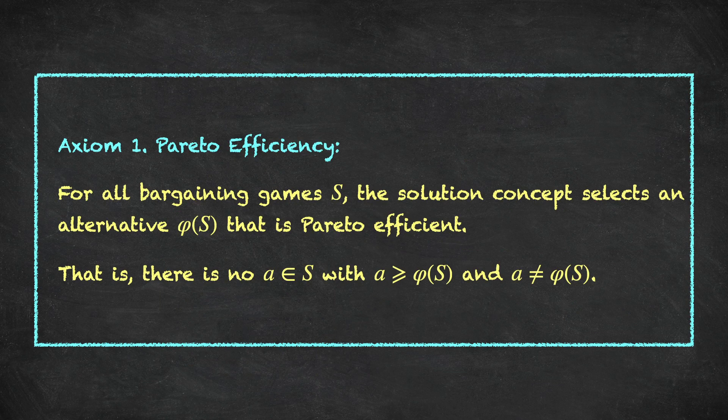The formal statement: Axiom 1, Pareto efficiency, says that for all bargaining games S, the solution concept selects an alternative phi of S that is Pareto efficient. Formally, there are no other alternatives A in the bargaining game S that are greater than or equal to phi of S and not equal to phi of S. This is a vector inequality — if A is greater than or equal to phi of S but not equal, then at least one coordinate is strictly larger.